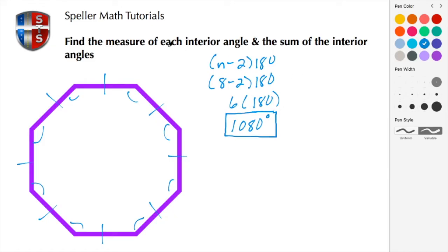Now to find the measure of each individual angle we need to divide this by the number of angles. In this case the number of angles is 8. So here we're going to take that 1080 and we're going to divide that by 8.